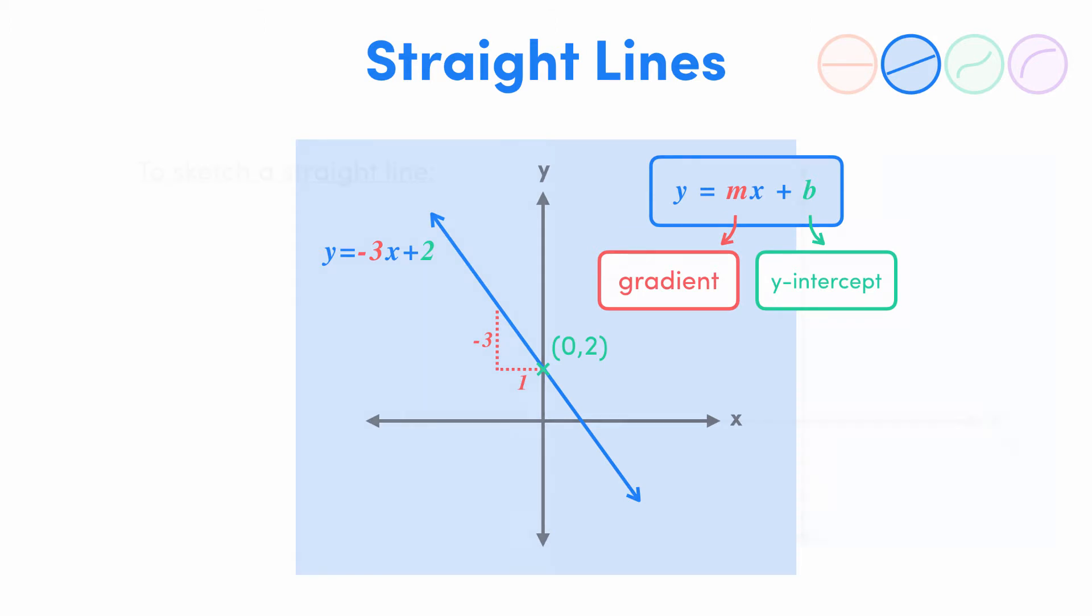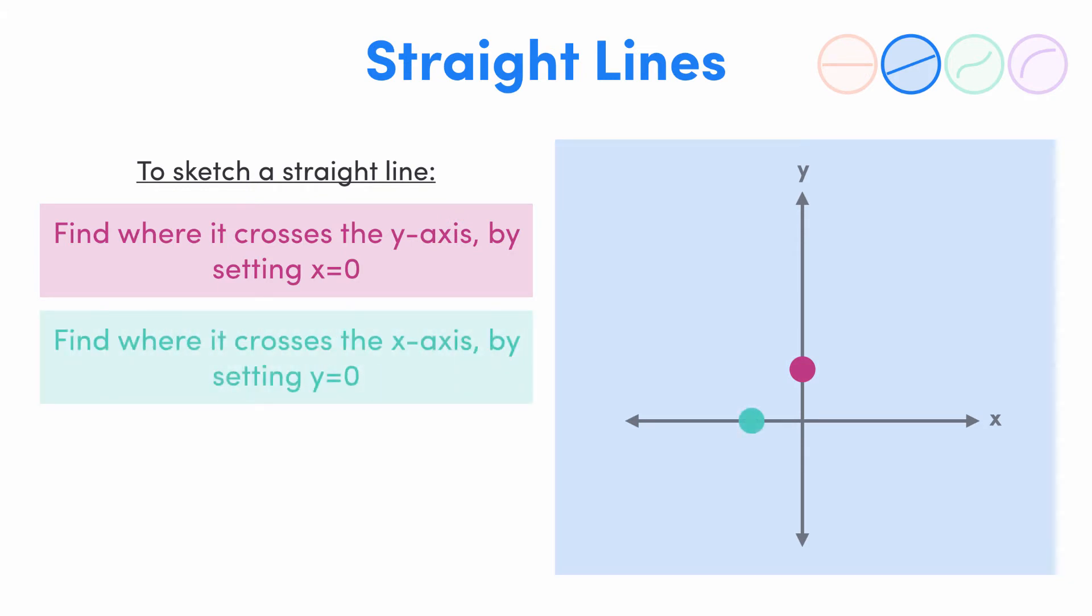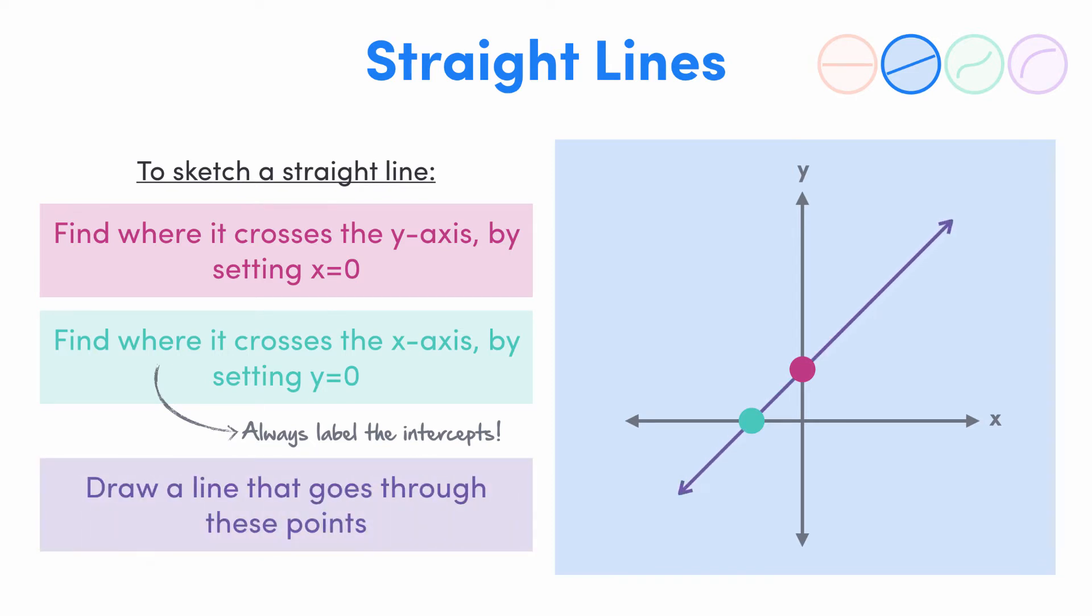Now if you're asked to sketch a graph, it doesn't have to be exactly to scale, but you do need to label some key points. So with a straight line, you should find where it crosses the y-axis by setting x equals 0 and solving for y, and where it crosses the x-axis by setting y equals 0 and solving for x. Make sure to always remember to label the intercepts, and that goes for every curve you ever sketch. Next, draw a line that goes through these points and extends in either direction, and that's your graph.